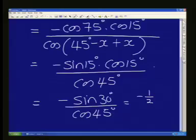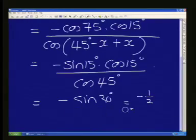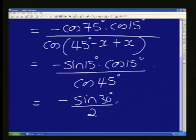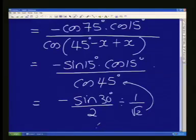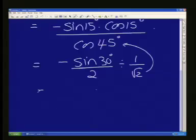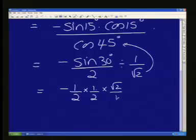And I am forgetting to divide by 2. So let me just correct this. This is sine 30 divided by 2. And then I've got this division by cos 45. So I'm dividing by 1 over root 2, which is my cos 45. And so I get negative 1 over 2 divided by 2 is just times a half times root 2 over 1. And we get root 2 over 4 with the negative there.